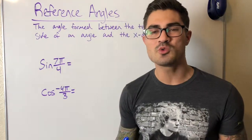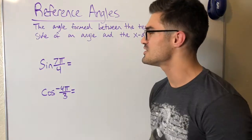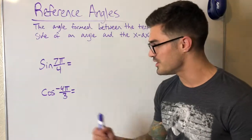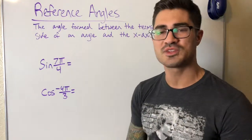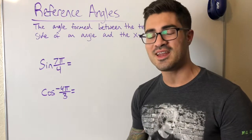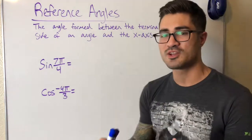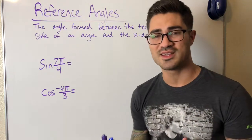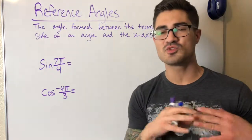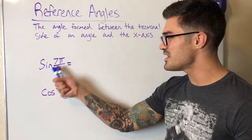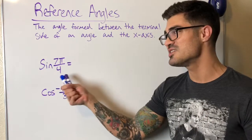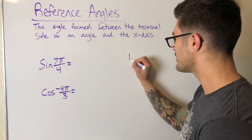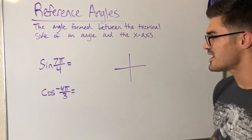Reference angles are most useful for evaluating trig functions and getting exact values — for example, sine of seven pi over four or cosine of negative four pi over three. I only have the first-quadrant values memorized, and I can find any exact value from just those because I know how reference angles and co-terminal angles work, and I know which trig functions are positive or negative in each quadrant.